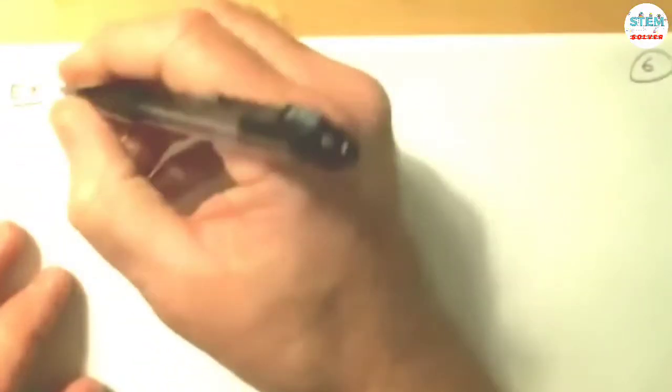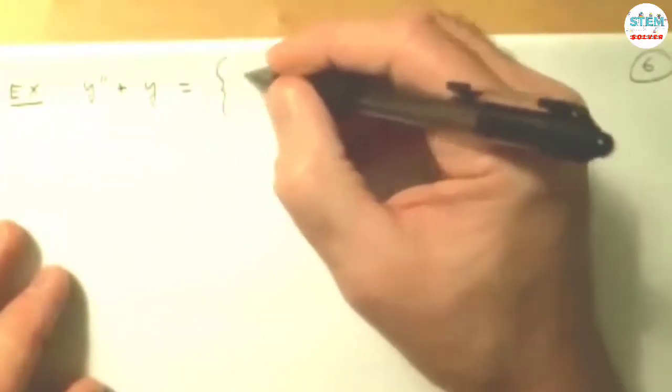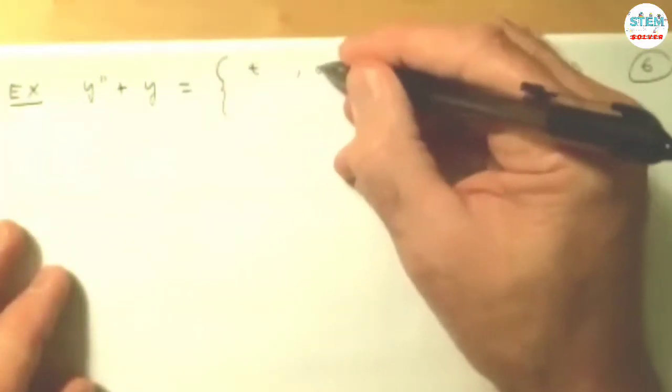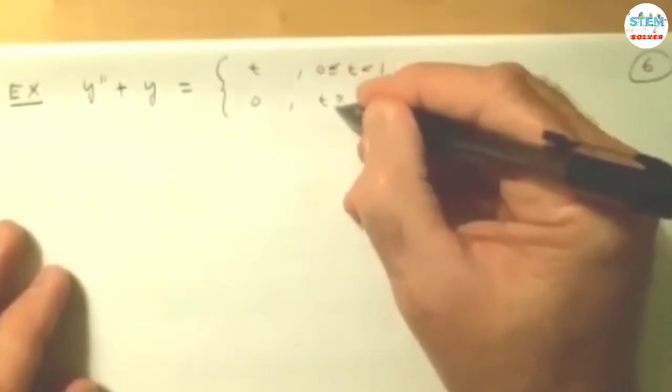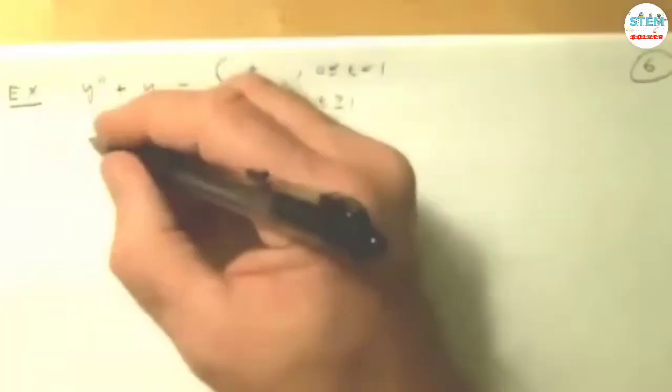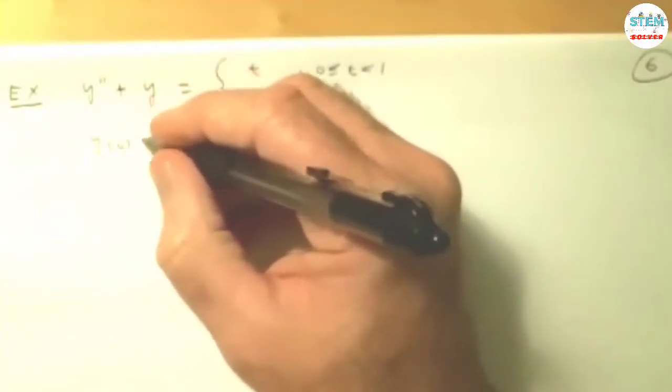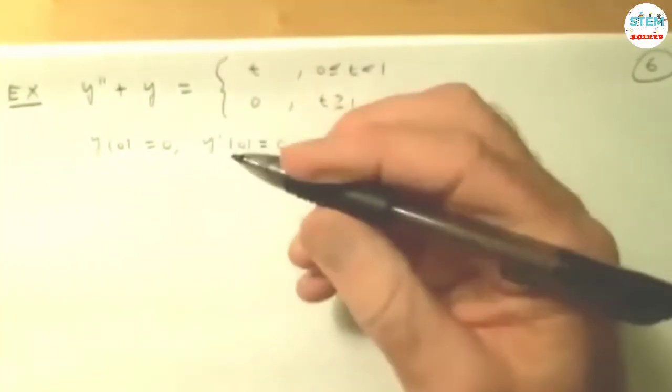So let's say we have the following. We have y double prime plus y equals this piecewise function. It's going to be t when t is between 0 and 1, and it's going to be 0 when t is greater than or equal to 1. We have conditions here: y of 0 is 0 and y prime of 0 is 0.